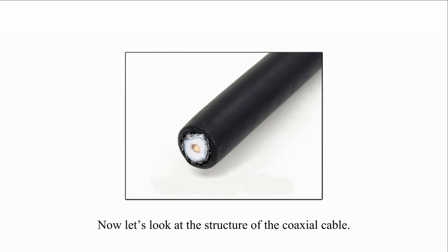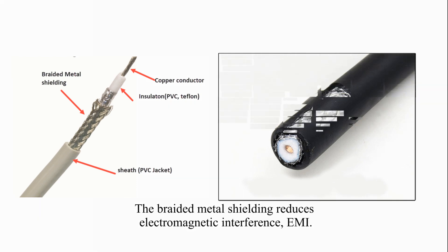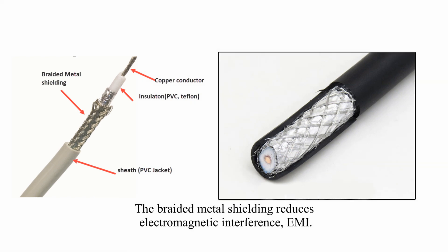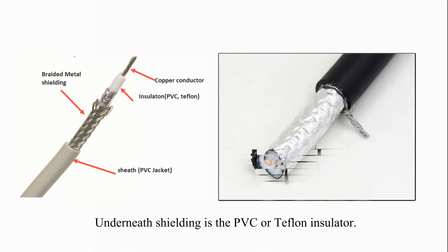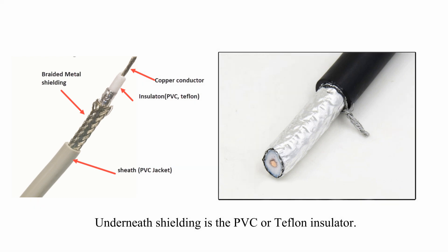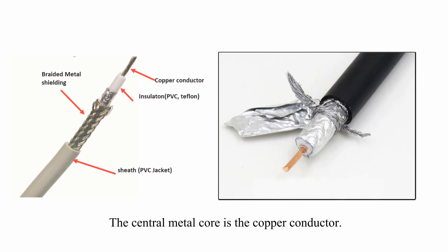Now let's look at the structure of coaxial cable. The outer cover is PVC or fire-resistant plastic called a sheath. The braided metal shielding reduces electromagnetic interference, EMI. Underneath the shielding is a PVC or Teflon insulator. The central metal core is the copper conductor.